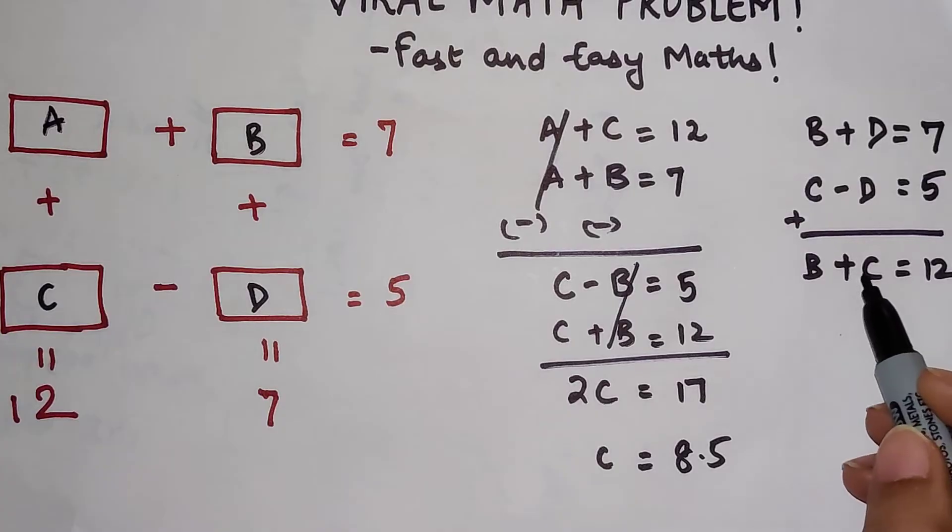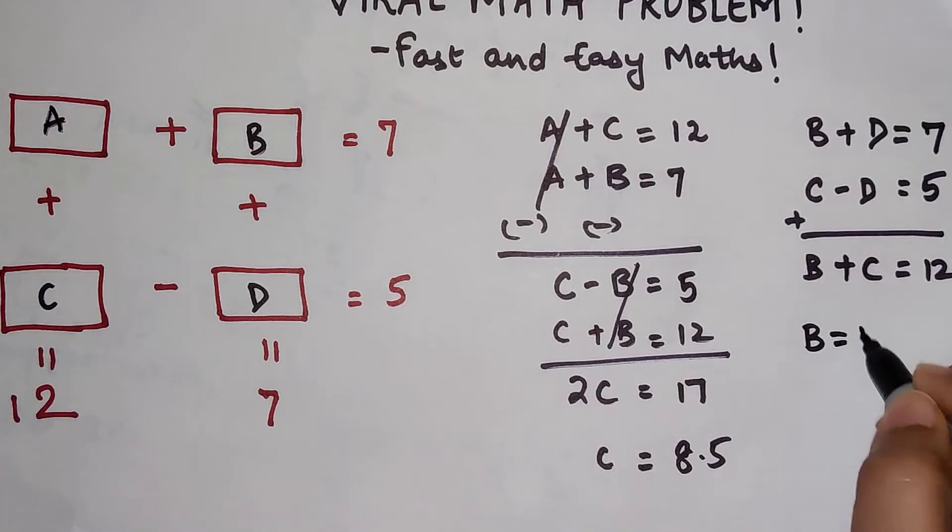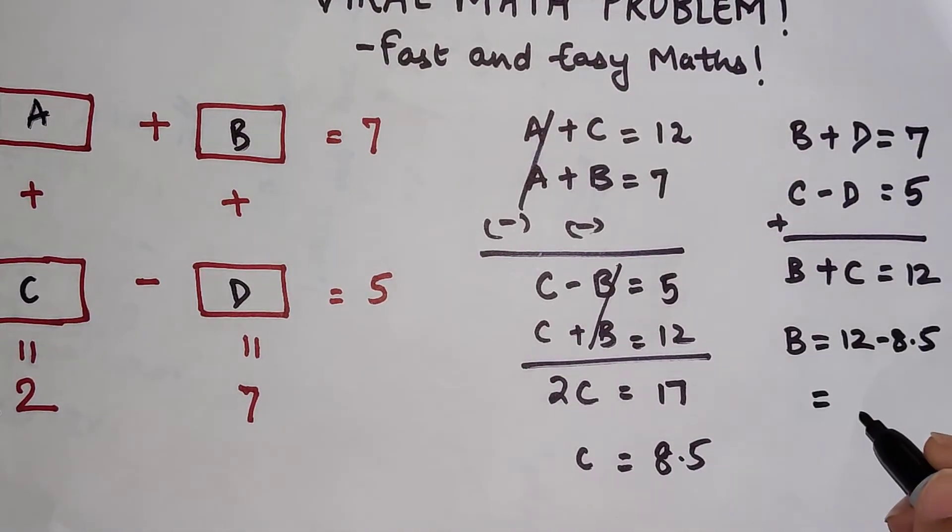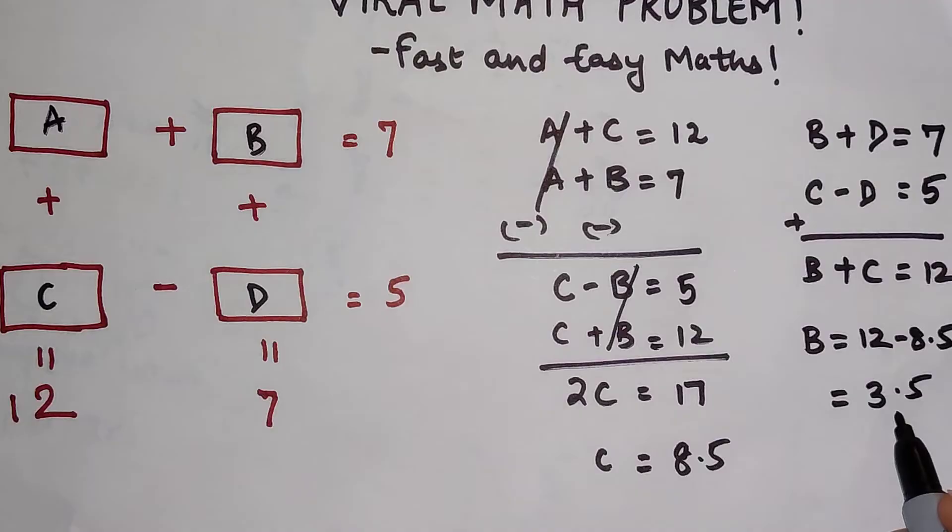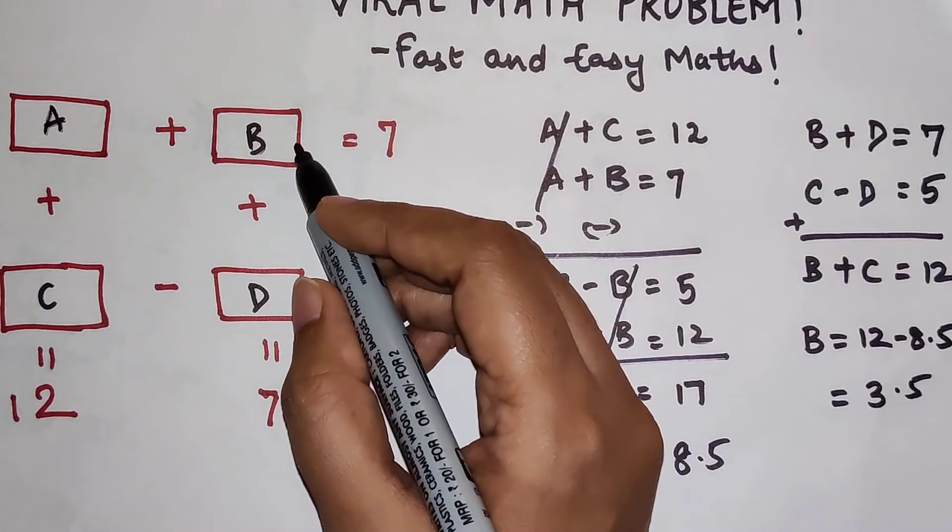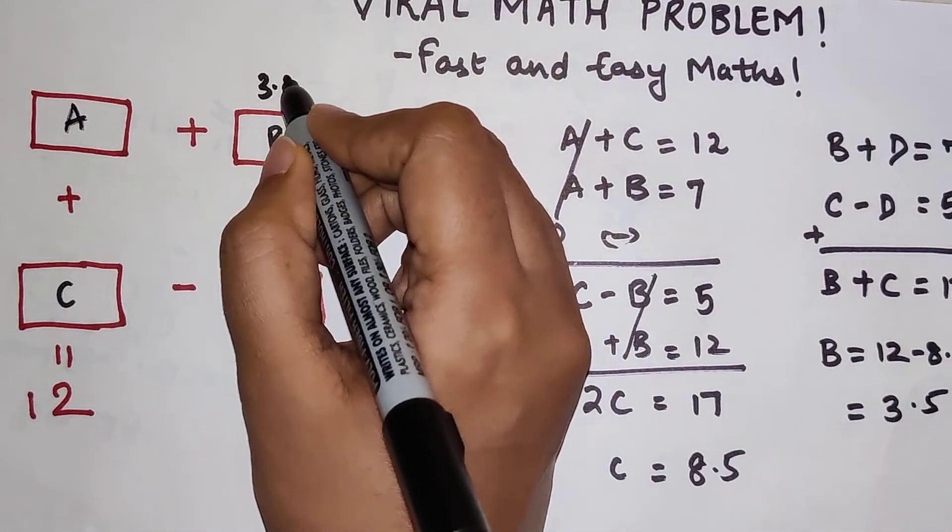...I can find the value of B, correct? So B will be 12 minus 8.5, correct? And that will be 3.5. So now if I have my value of B as 3.5, so here let's say this is 3.5...